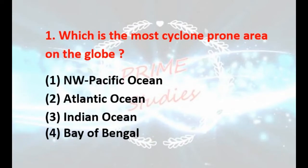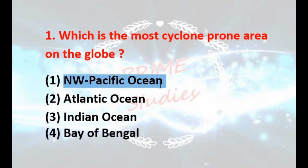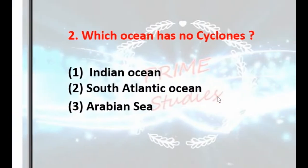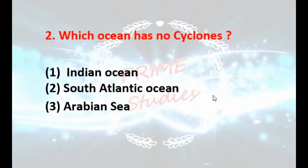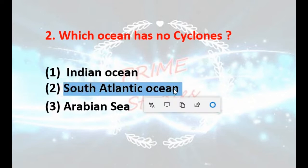Welcome again to Prime Studies. Very important MCQs from the chapter on cyclones. First question: which is the most cyclone-prone area on the globe? It is the Northwest Pacific Ocean. Which ocean has no cyclones? It is the South Atlantic Ocean — it has no cyclones.